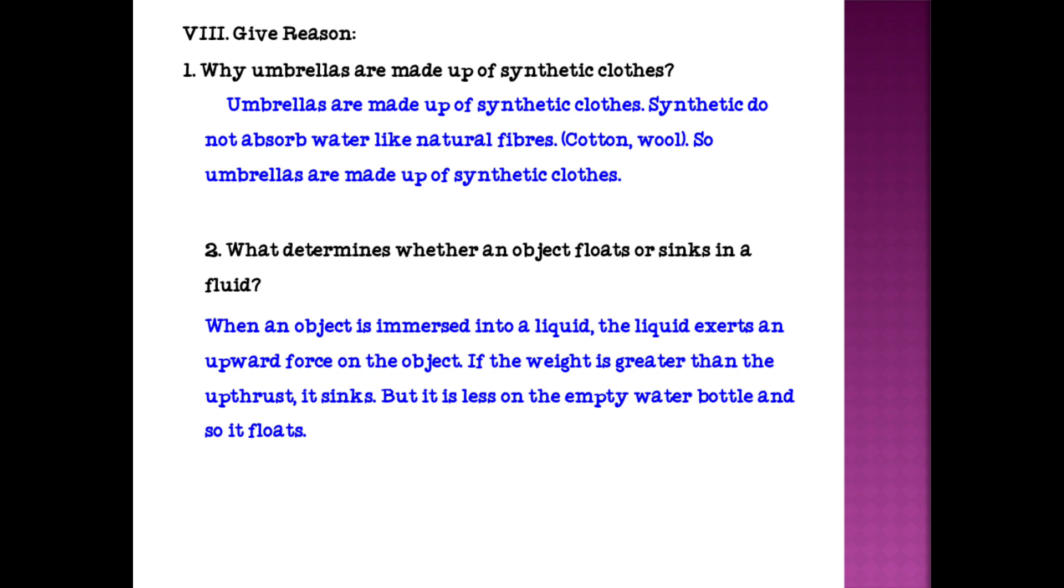Give reason. First question: why umbrellas are made up of synthetic cloths? Umbrellas are made up of synthetic cloths. Synthetics do not absorb water like natural fibers, cotton wool. So umbrellas are made up of synthetic cloths. Second question: what determines whether an object floats or sinks in a fluid? When an object is immersed into a liquid, the liquid exerts an upward force onto the object. If the weight is greater than the upthrust it sinks, but it is less on the empty water bottle and so it floats.